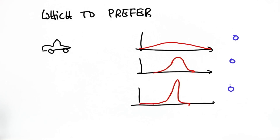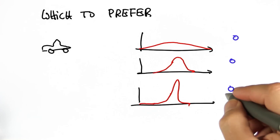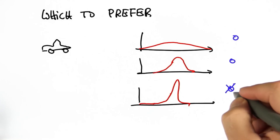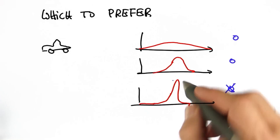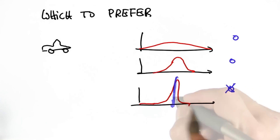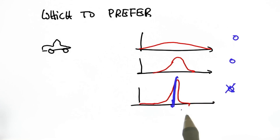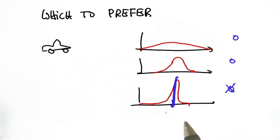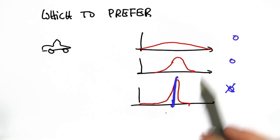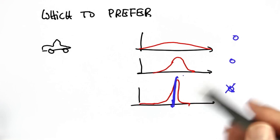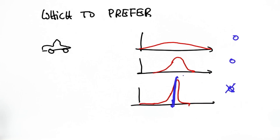And the answer is the third, because that's the one that's most certain. And because it's most certain, it makes the chance of accidentally hitting another car the smallest, just by the fact that we know more about the car than in the two other distributions.